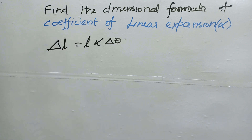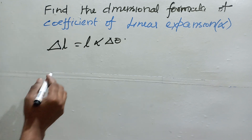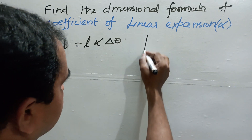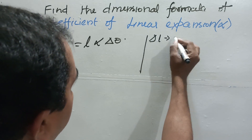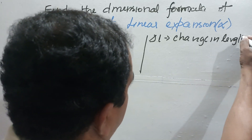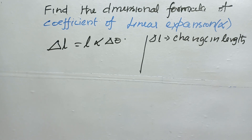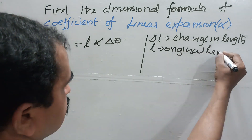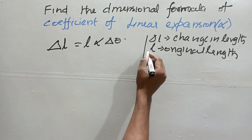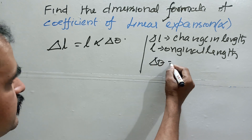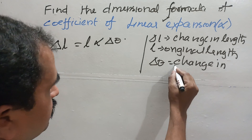Here, ΔL is the change in length, small L is the original length of the rod, alpha (α) is the linear expansion coefficient, and Δθ is the change in temperature.